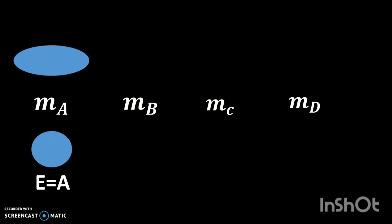Now, if the particle has energy B, then it is represented by mathematical object m_B, and so on and so forth.